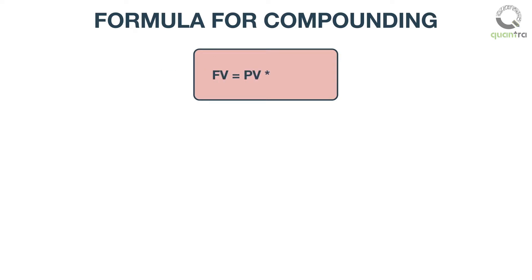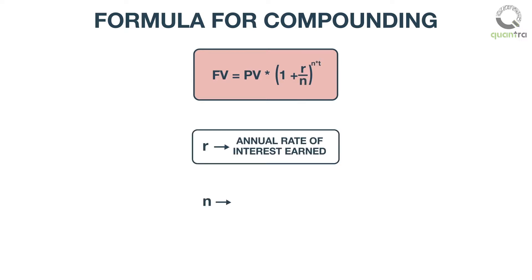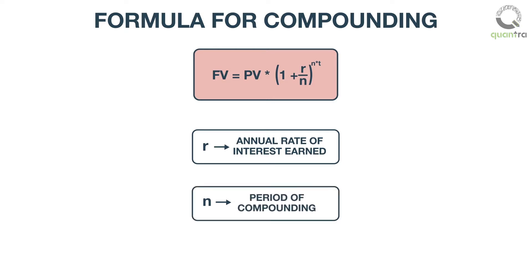Future value is equal to present value into 1 plus R by N, raised to N into T. Here, R is the annual rate of interest earned, and N is the period of compounding. For example, N is equal to 2 in case of semi-annual payments, 4 in case of quarterly payments, and so on.